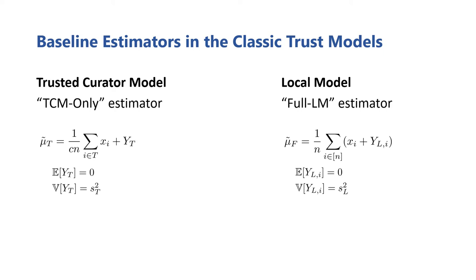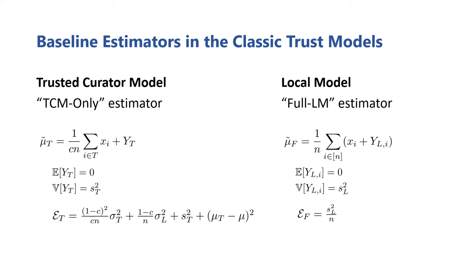I should note that although the noise addition privatization mechanisms here seem simple, it's actually a fairly broad class, which includes two of the most popular differential privacy mechanisms, the Laplace and Gaussian mechanism. We derive the following error expressions for both estimators.